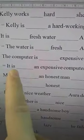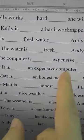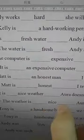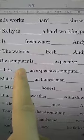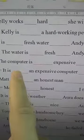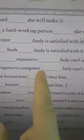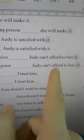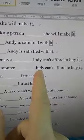And: 'It is ___ an expensive computer ___ Judy can't afford to buy it.' You see a noun here, so we use 'such': 'It is such an expensive computer that Judy can't afford to buy it.' We use 'that' plus one sentence — a clause.